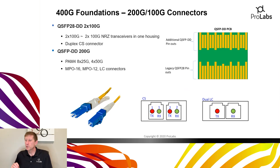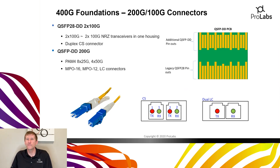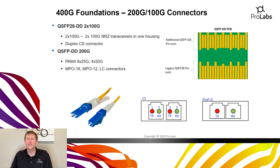The QSFPDD 200Gig transceivers are evolving standards, using PAM4 with 8x25 gig or 4x50 gig configurations. Over the next year we're going to see many more 200Gig transceivers come to market in various PAM4 varieties, but they are still very much developing as of today.